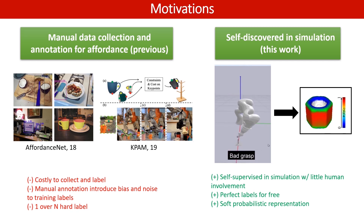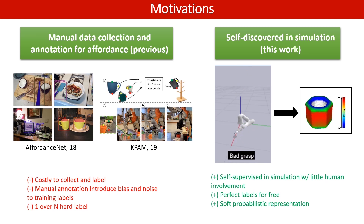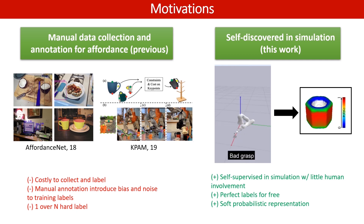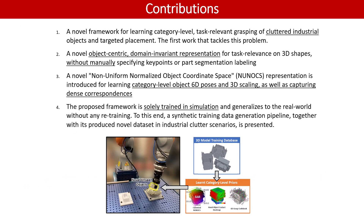The human labeling process also introduced bias and noise to the training labels. In contrast, we developed a self-supervised process in simulation to automatically discover the task-relevant regions for grasping. The perfect labels can be retrieved from simulation for free. The accumulated grasping experience finally leads to a soft probabilistic representation as shown on the right. To verify the effectiveness, we conducted experiments over densely cluttered scenarios composed of real industrial objects with challenging properties.